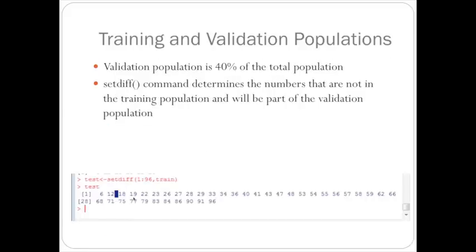To get the row numbers for the validation population, I use the setdiff command. This just gives us the numbers that were not sampled in the training population. These are the 38 individuals that we will keep in our validation population.